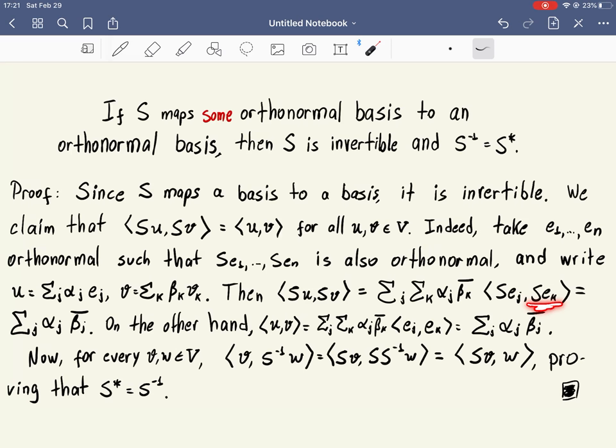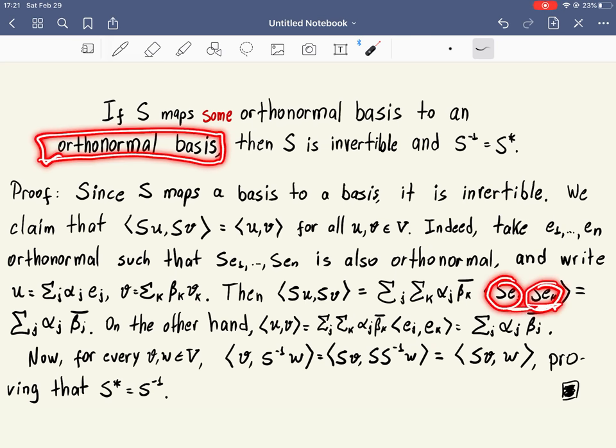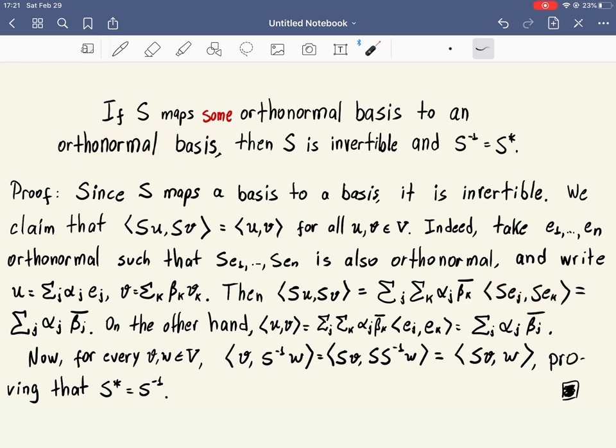And now is when we use the assumption. What's the assumption? That the image of S is an orthonormal basis. So here we are computing the inner product between members of an orthonormal family. This inner product will be zero unless K equals J, in which case it will be one. So this summation disappears, and here instead of K, we get J.